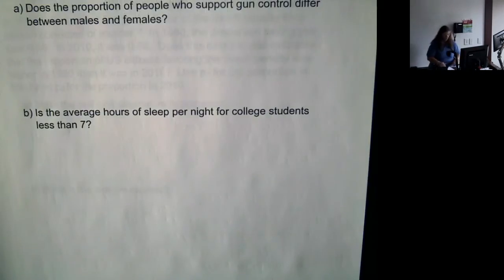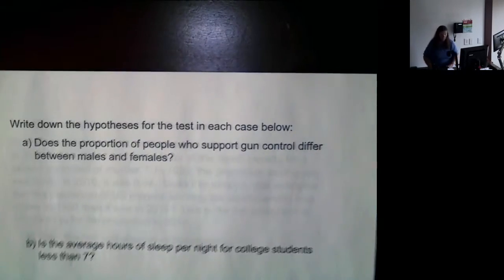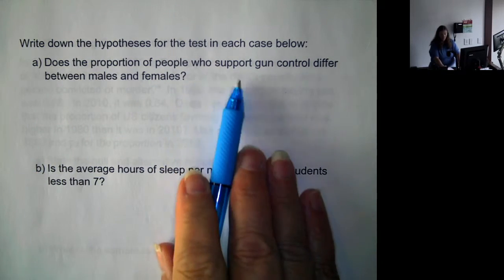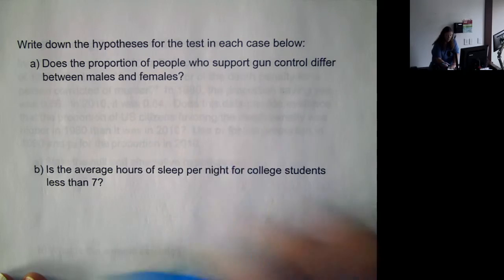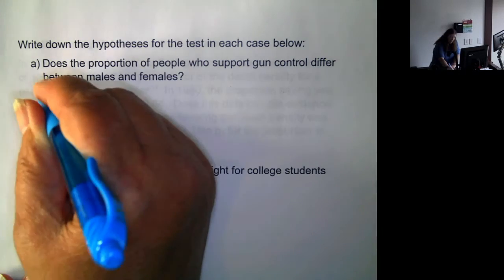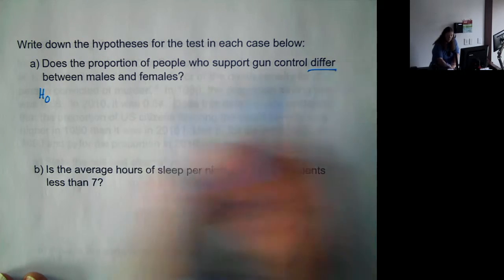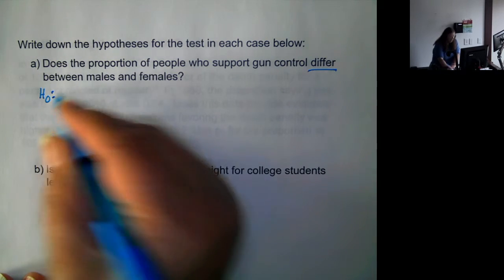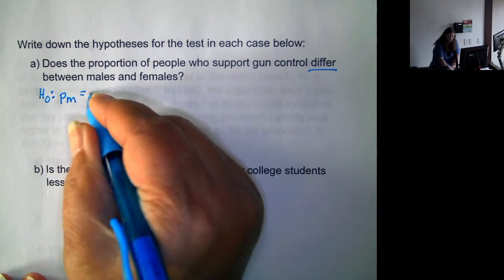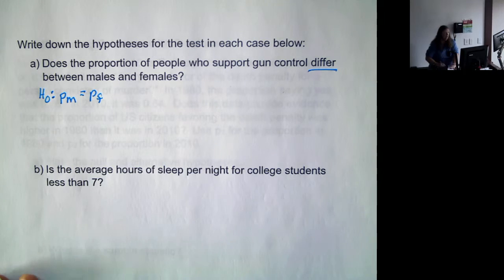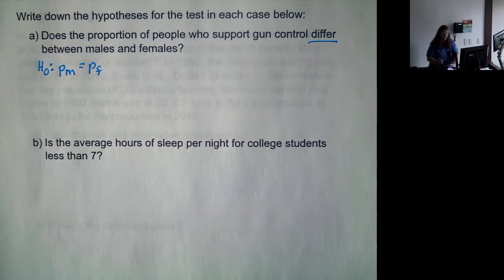So let's go through just some writing down hypotheses. We want to see if it differs. Well, the null hypothesis would be that the proportion for males is equal to the proportion for females, because the null hypothesis is always that there's no change, there's no difference.